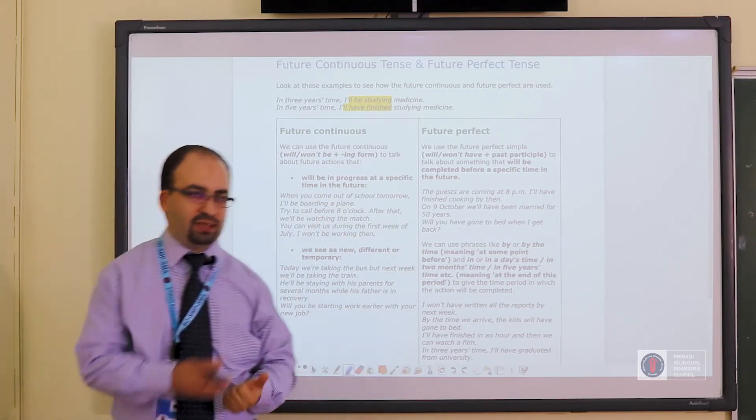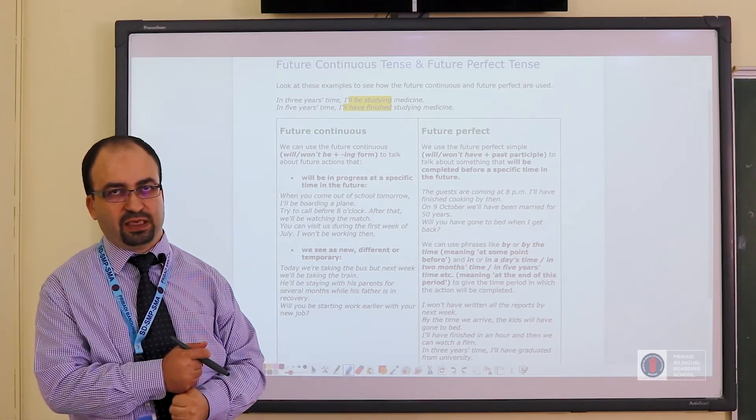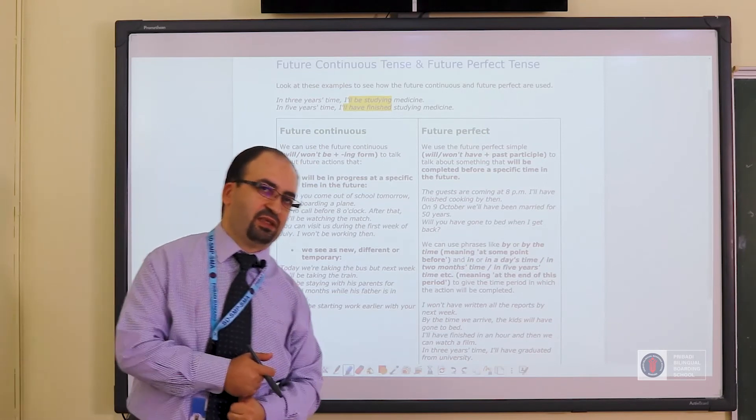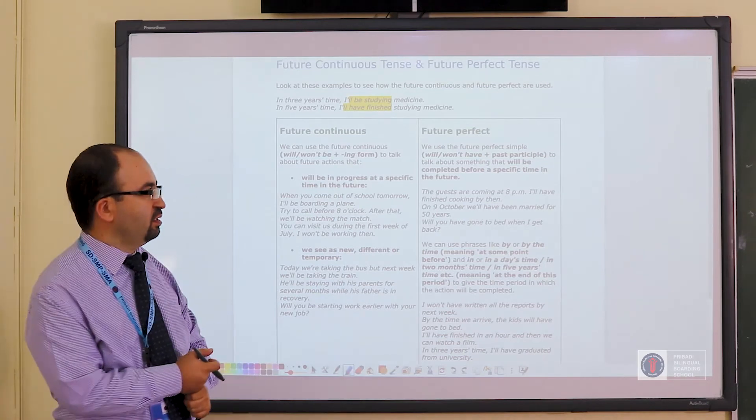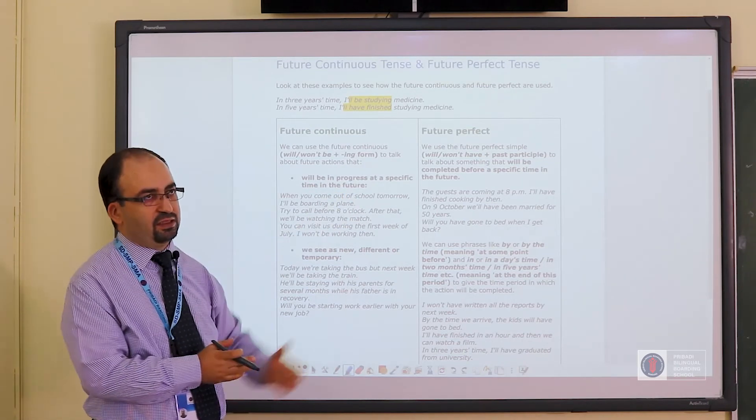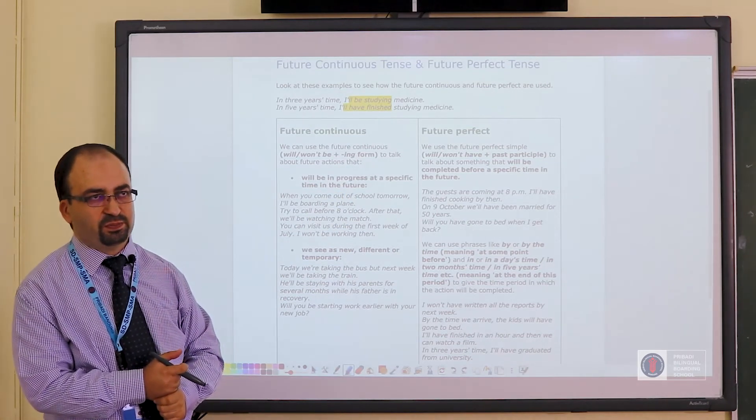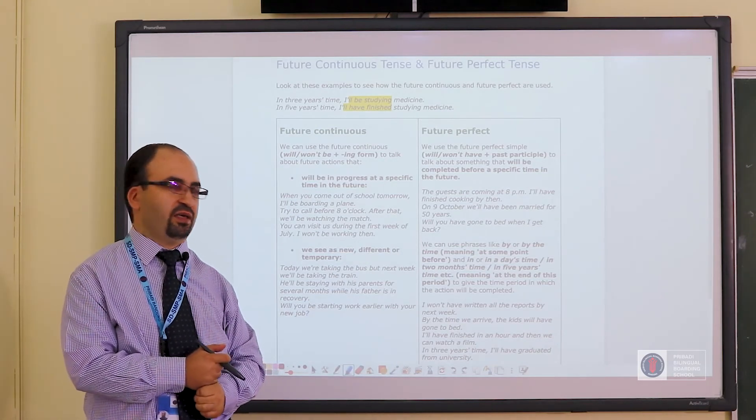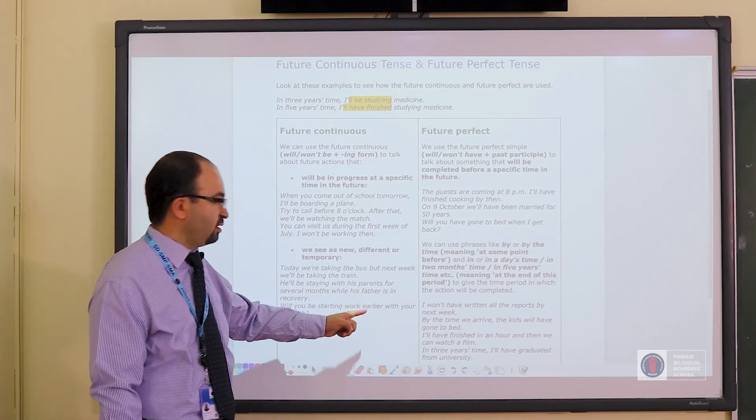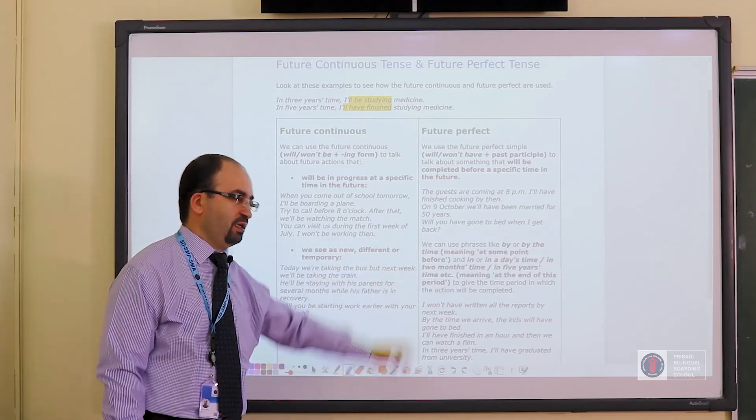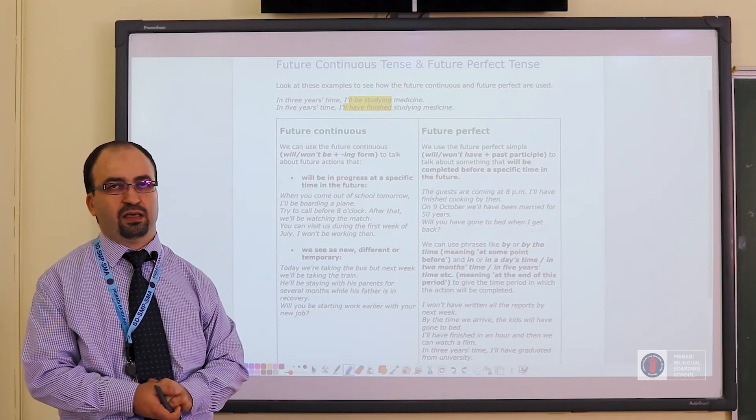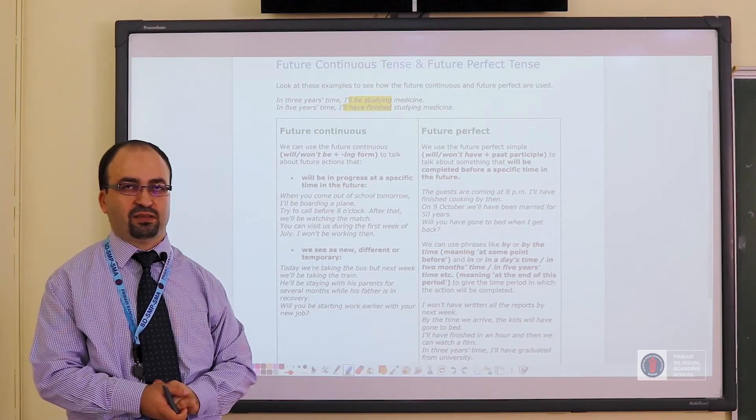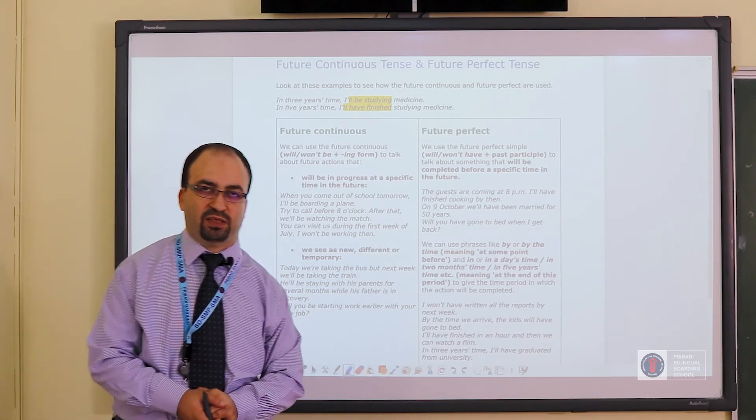So these are the two tenses related to future. One for the activities happening. One for the activities which will have been completed. The structures as I said can give a clue to you, whether the event is completed or not. Also you can refer to some time phrases at the end of the sentence. If you still have questions, I'm contactable. Thank you very much. Bye.